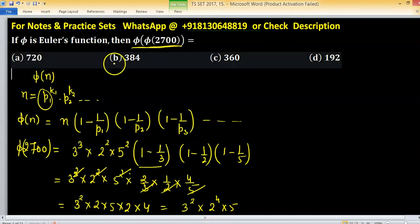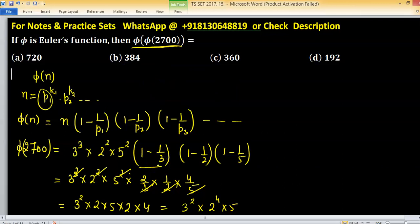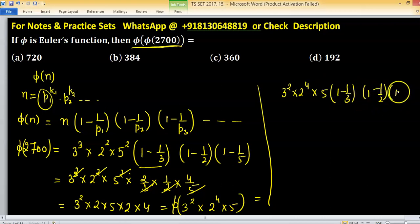Now because we have to find value of phi of phi 2700, now apply again phi on this. Phi on this will equal to 3 square 2 raised to the power 4 and 5, times (1 - 1/3) times (1 - 1/2) and (1 - 1/5). What we have? 3 square 2 raised to the power 4 and 5 into 2/3, 1/2 into 4/5.